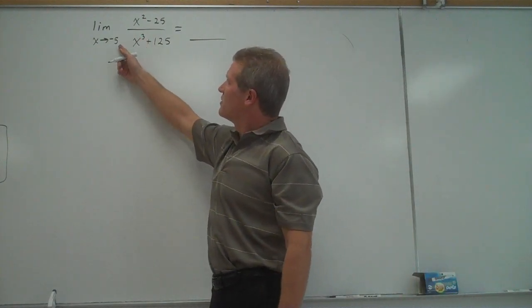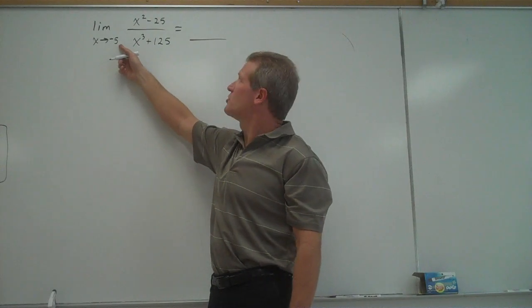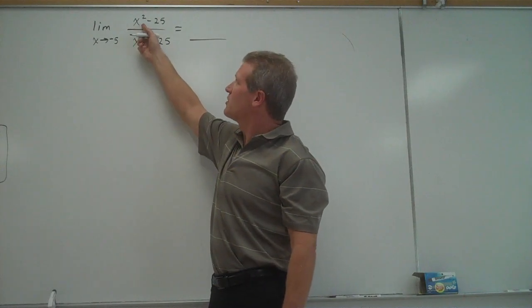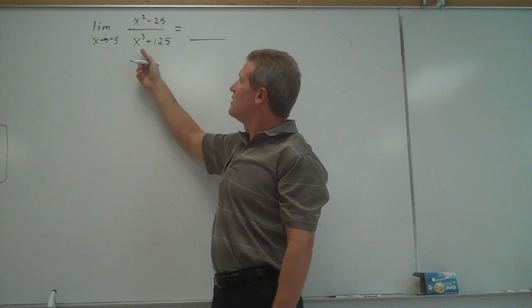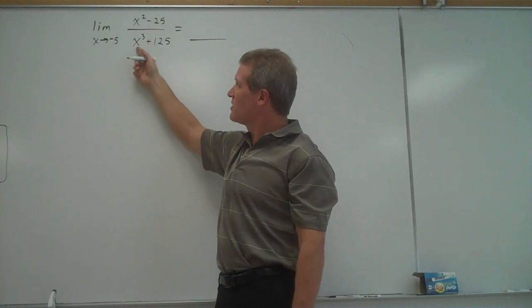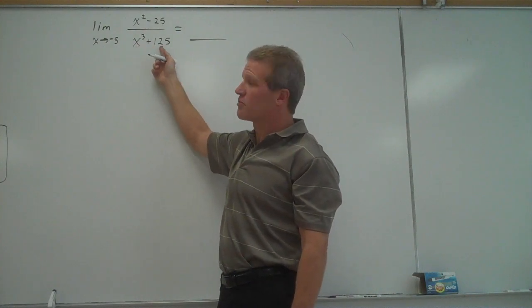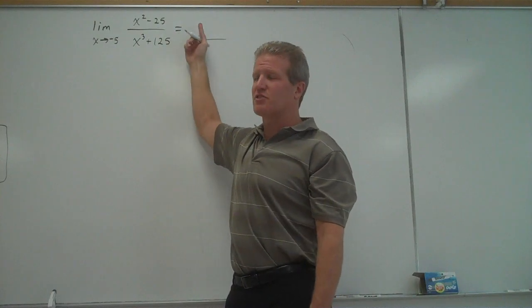If I plug negative 5 in and try to solve this limit using substitution, if I plug negative 5 in here, I get 25 minus 25, which is 0. If I plug negative 5 in here, I get negative 125 plus 125, that's also 0. So I get 0 over 0.